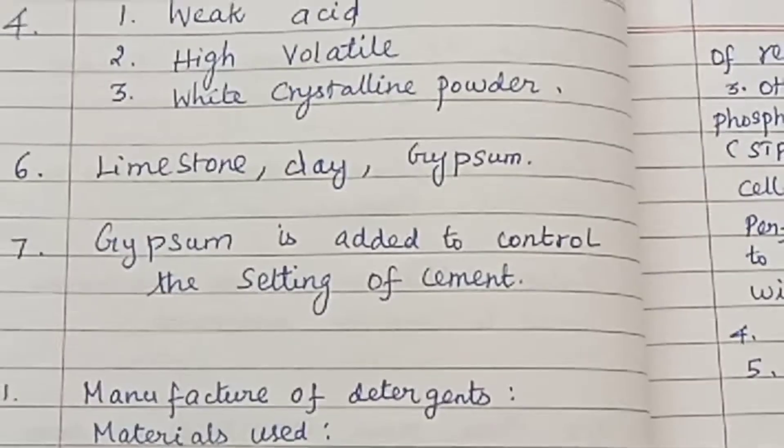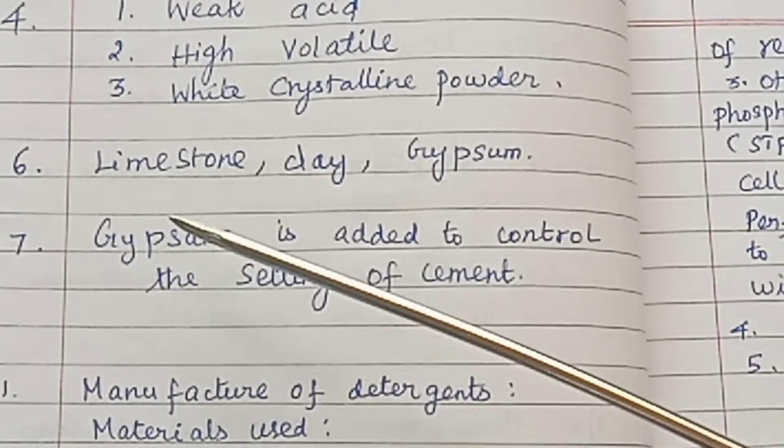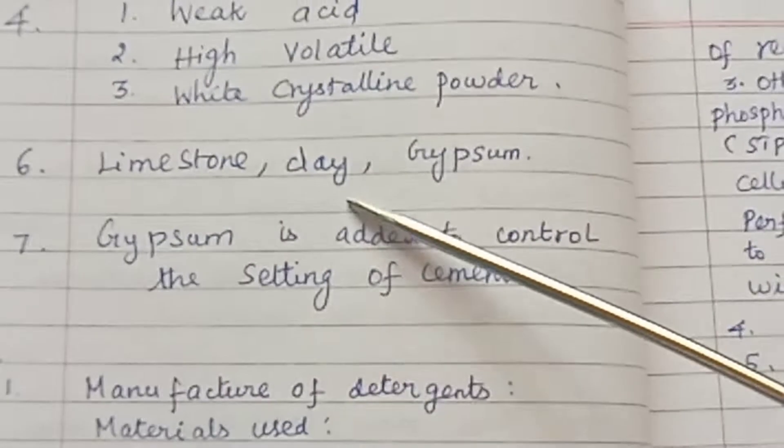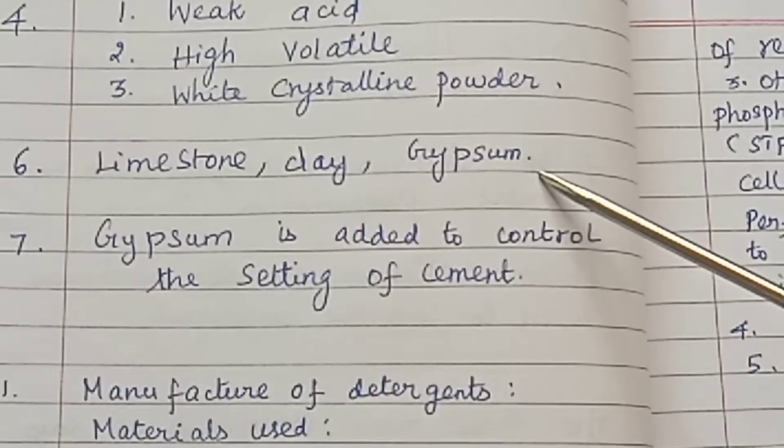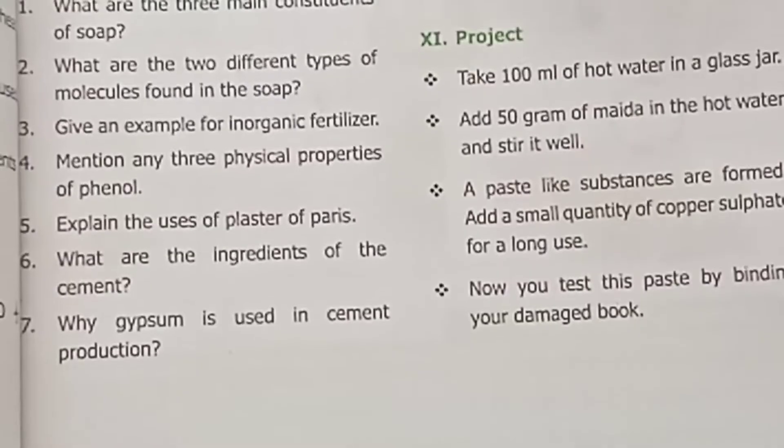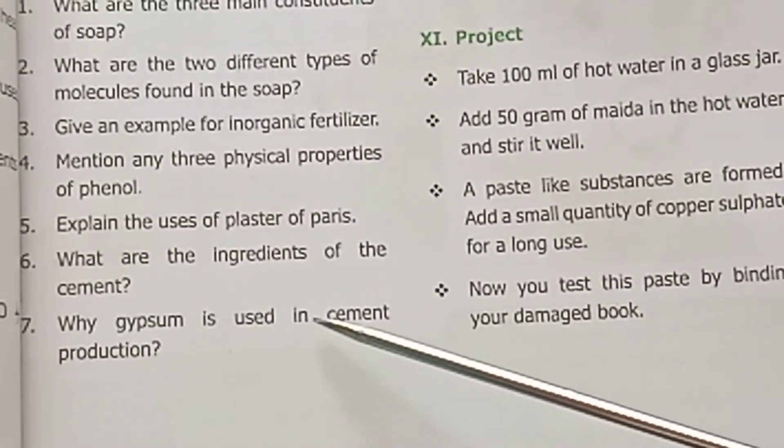6. What are the ingredients of cement? The ingredients of cement are limestone, clay, and gypsum.